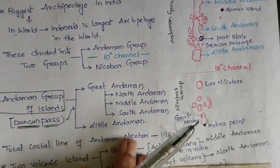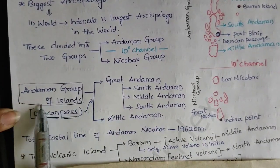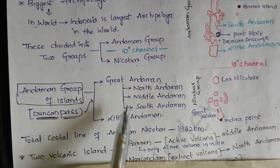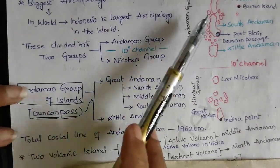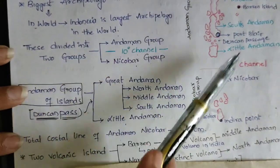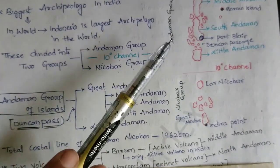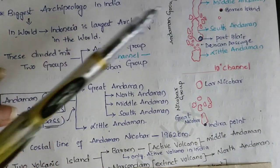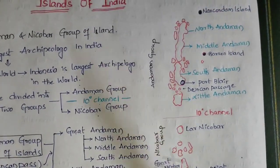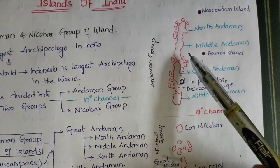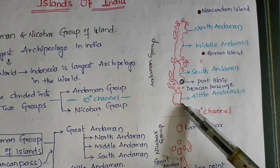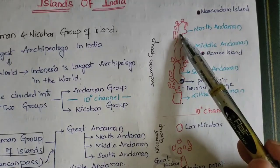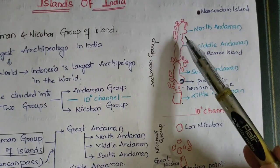In the Andaman group, the main group of islands is divided into two things: Great Andaman and Little Andaman. This is your Great Andaman and this is your Little Andaman. The Great Andaman was again divided into three parts: North, Middle, and South.